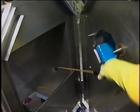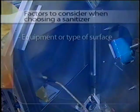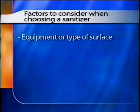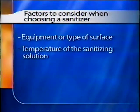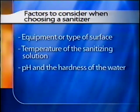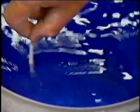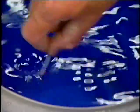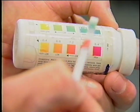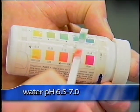There are several factors to consider when choosing a sanitizer. These factors include equipment or type of surface, temperature of the sanitizing solution, pH and the hardness of the water, as well as sanitizer contact time. Of these factors, water pH is the most important. All sanitizers are most effective when the pH of the water used during sanitizing is kept at a level of 6.5 to 7.0.